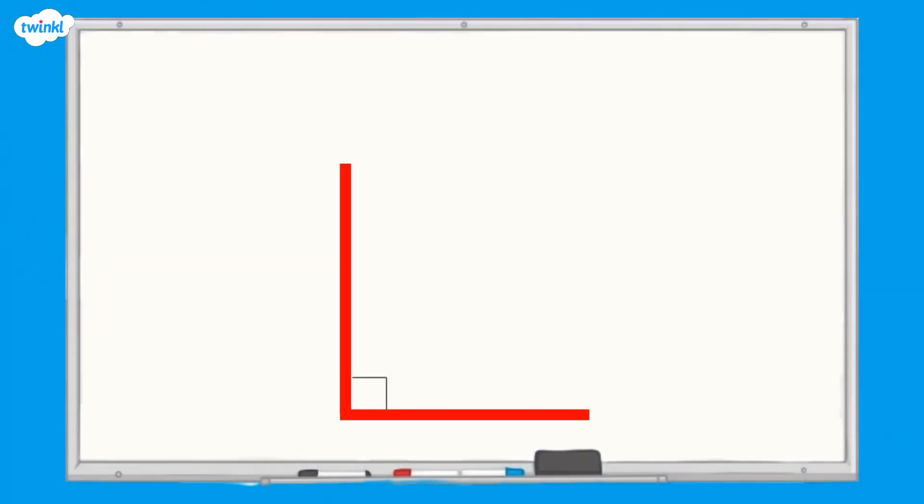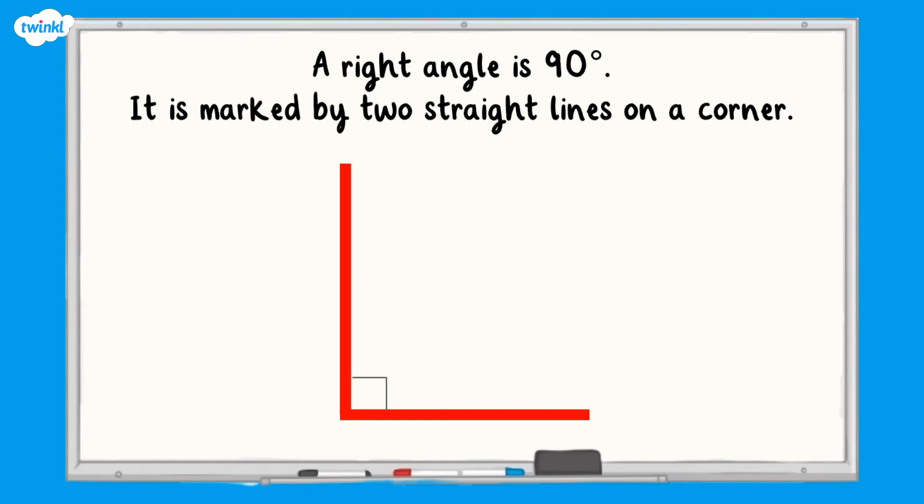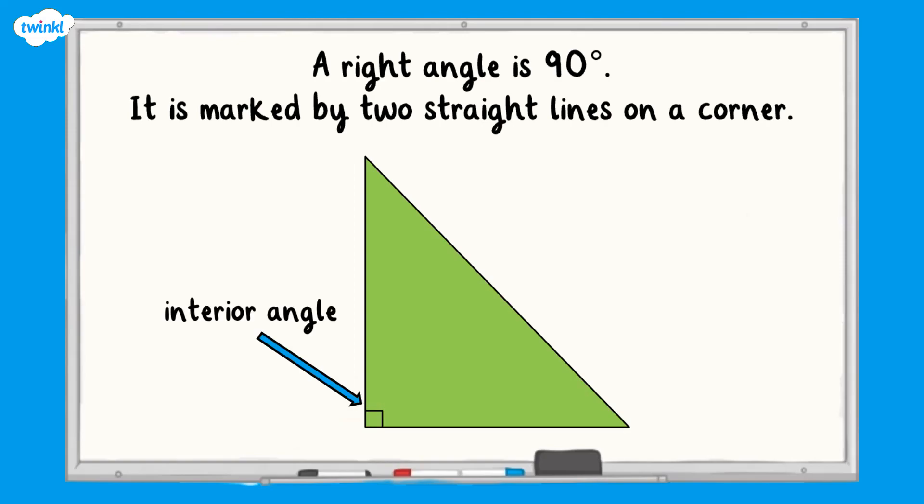This is a right angle. It is 90 degrees. It is marked by two straight lines on a corner. In this right angle triangle there is one right angle inside the shape. We call this an interior angle.